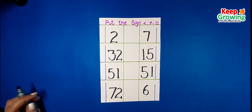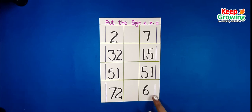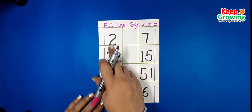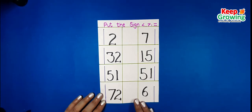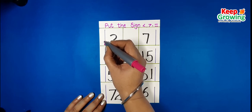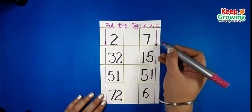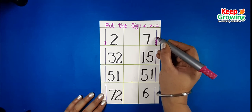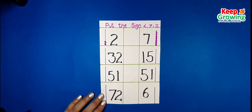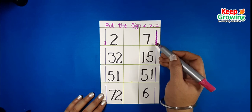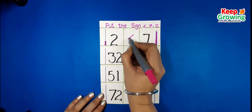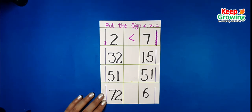For more practice, we can do a worksheet. Number 2 and number 7. We will compare number 2 to number 7. We make 2 beads for number 2 and 7 beads for number 7. We can easily observe that number 7 has more beads. It means Ali the alligator eats number 7. The open mouth of the alligator is always towards the bigger number.